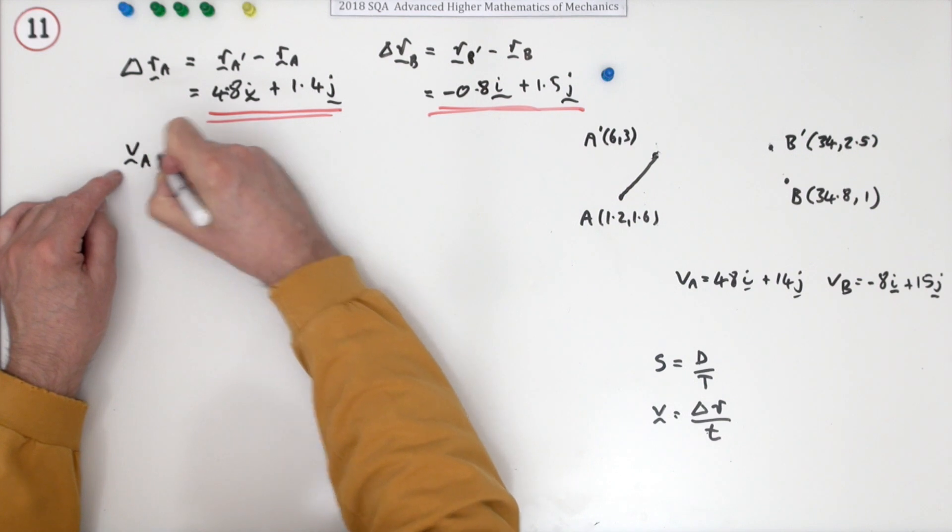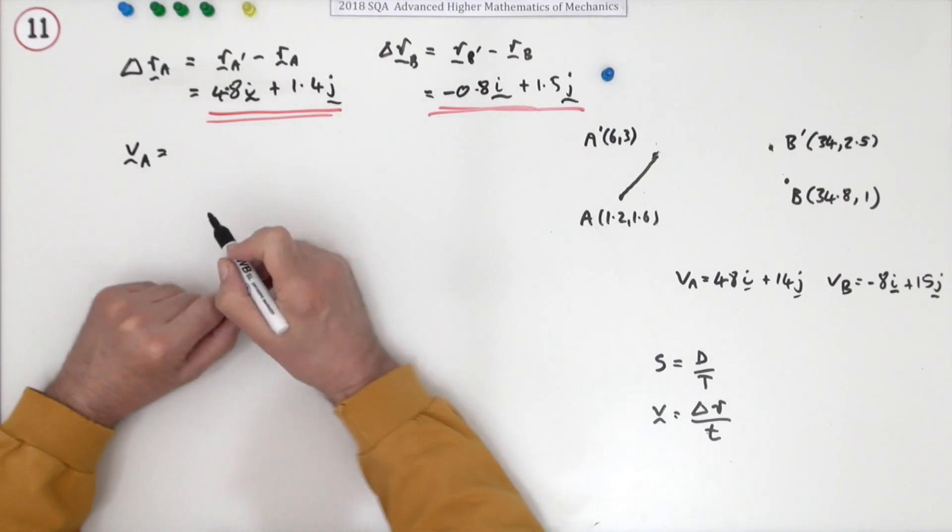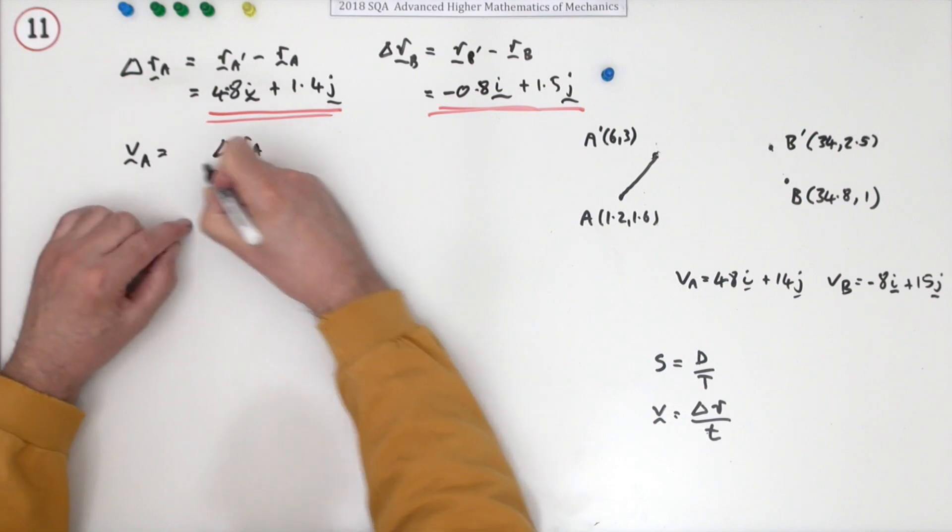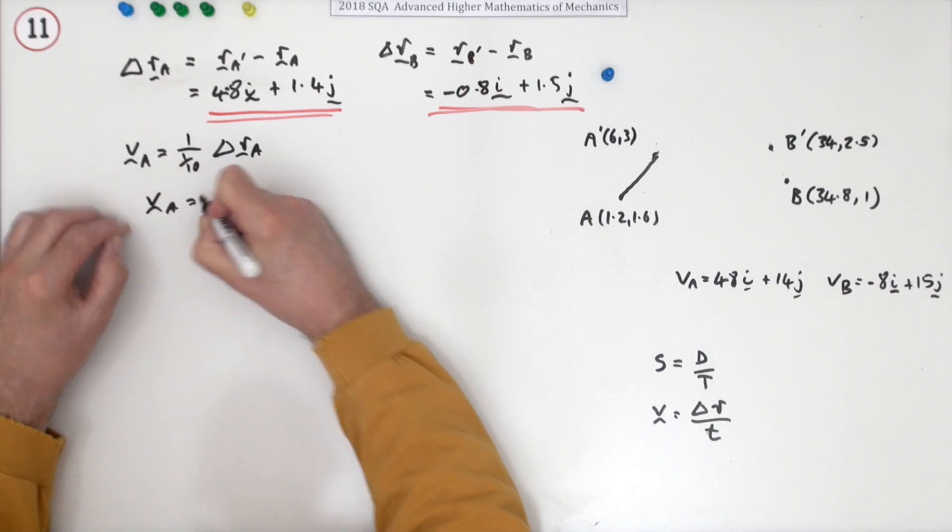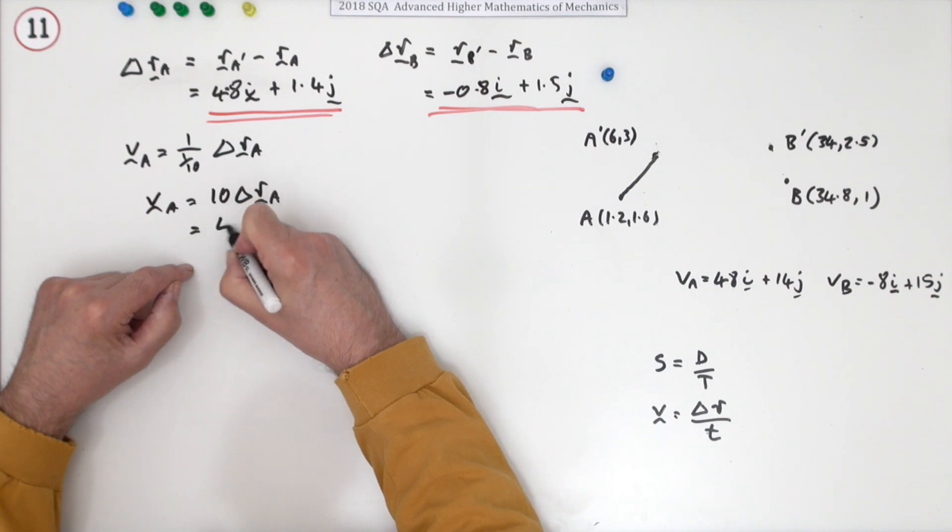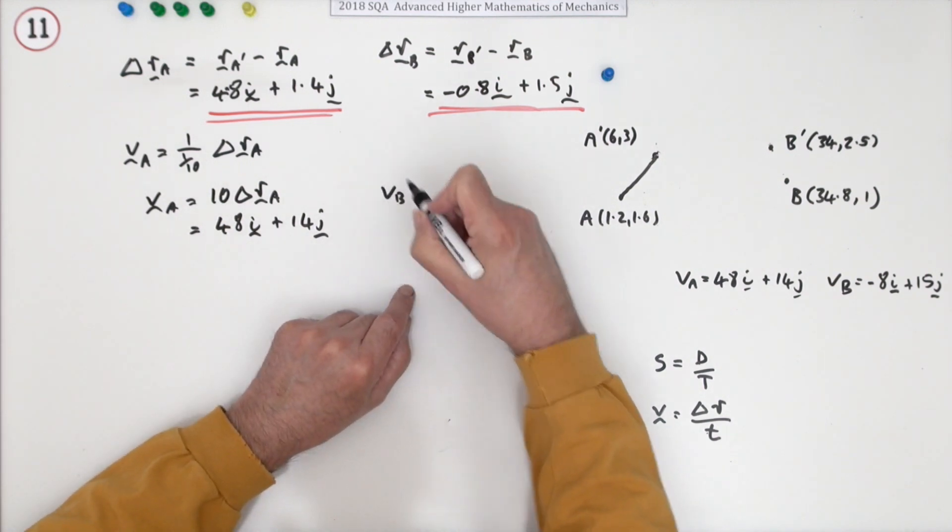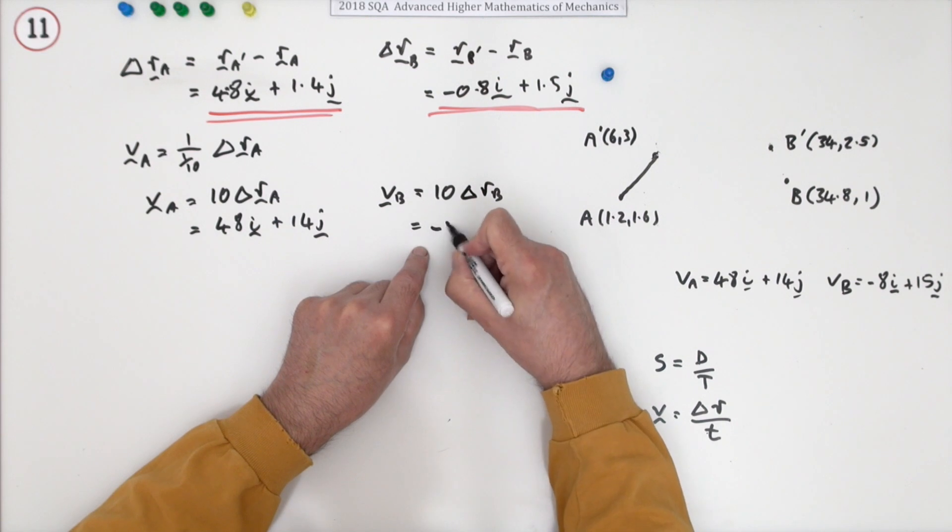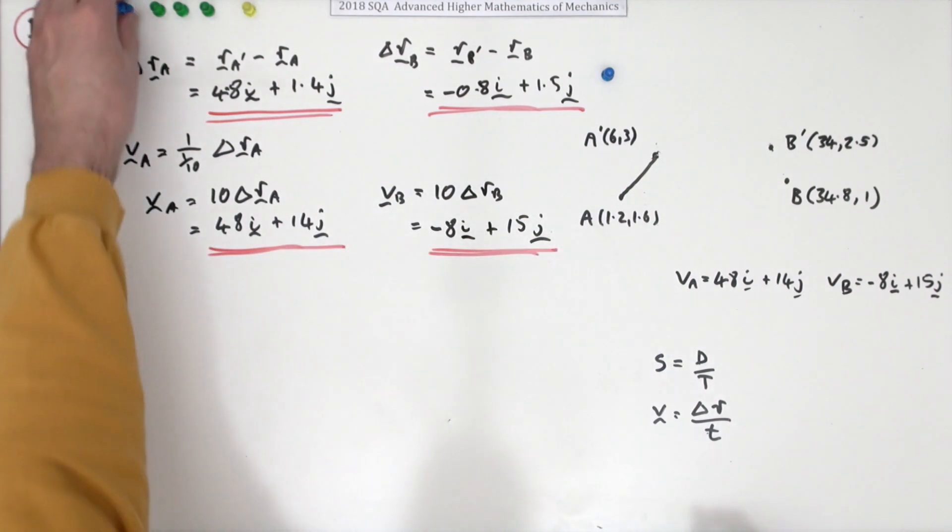So what are the speeds? VA will be the displacement divided by the time. Now it's six minutes but you need to have that in hours because you want kilometers per hour, so six minutes is a tenth of an hour. So it will be the displacement Δr_A divided by a tenth. Divided by a tenth is ten times it, so VA is going to be ten times that, which is just going to make it 48i plus 14j. Similarly, VB will have to be 10 Δr_B which will be negative 8i plus 15j. That's the second mark.